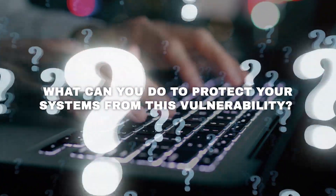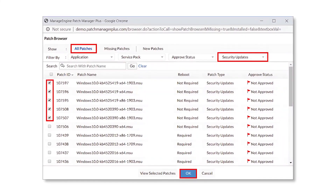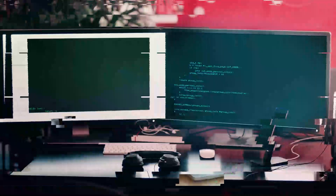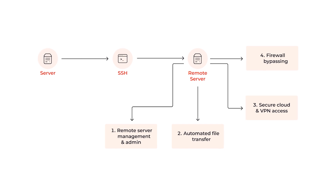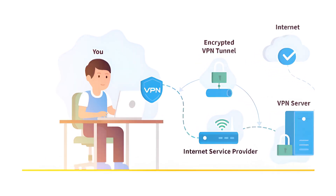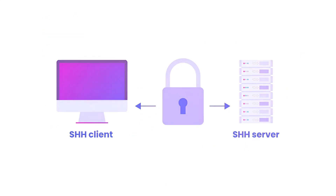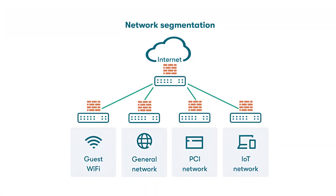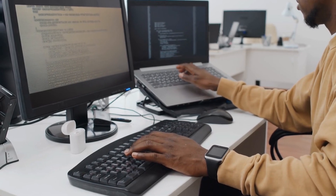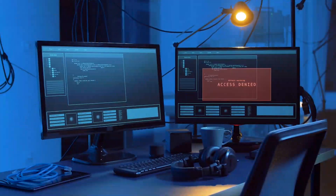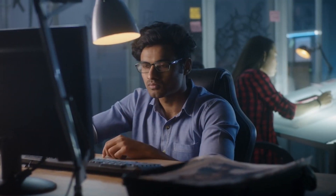So what can you do to protect your systems? The most important step is to apply the latest patches as soon as possible, as OpenSSH maintainers have released security updates to address this issue. It's also advisable to limit SSH access through network-based controls — implementing strict firewall rules, using VPNs for remote access, and possibly considering jump servers for added security. Additionally, enforce network segmentation by dividing your network into smaller isolated segments, restricting unauthorized access and lateral movement even if one segment is compromised.